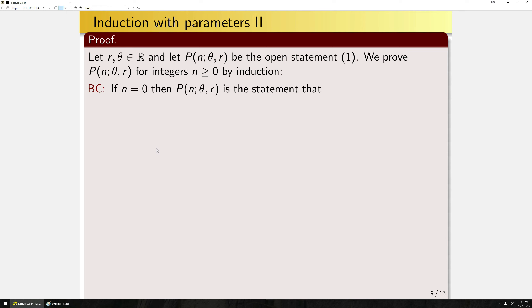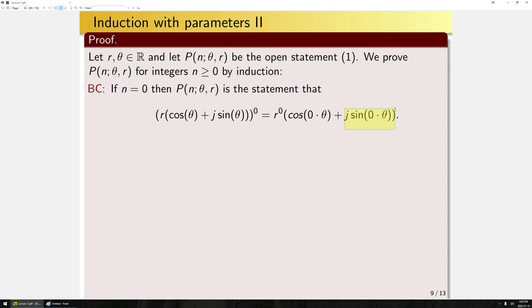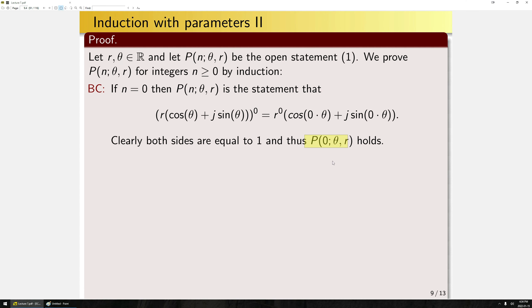We prove P(N; r, θ) for N≥0 by induction. Base case: N=0. The left side becomes (r·e^(iθ))^0 = 1. The right side becomes r^0·(cos(0) + i·sin(0)) = 1·(1 + 0) = 1. Both sides equal 1 for any real r and θ, so the base case holds.